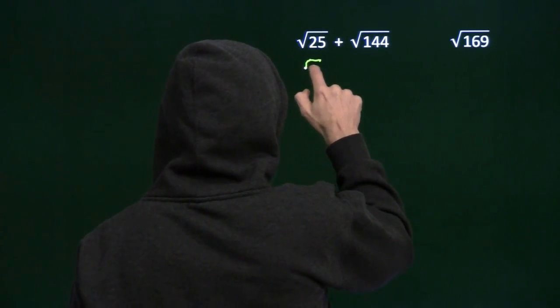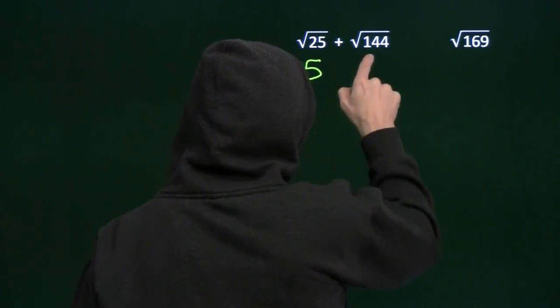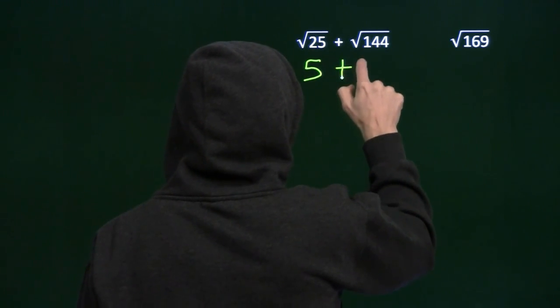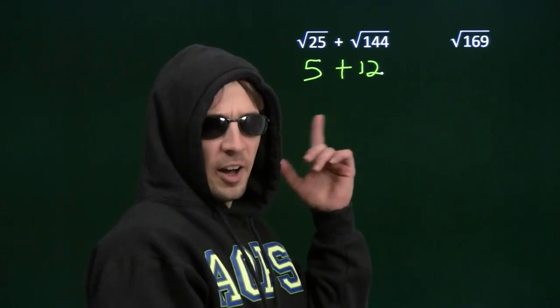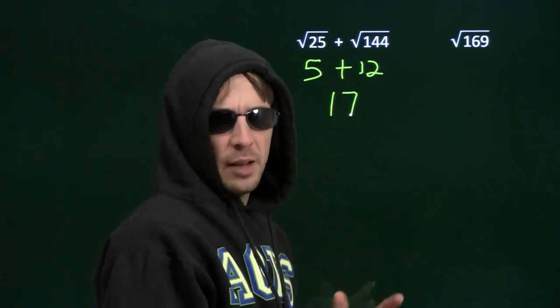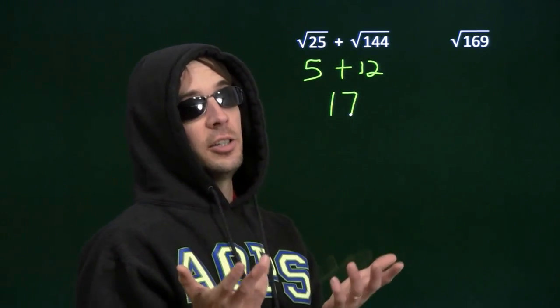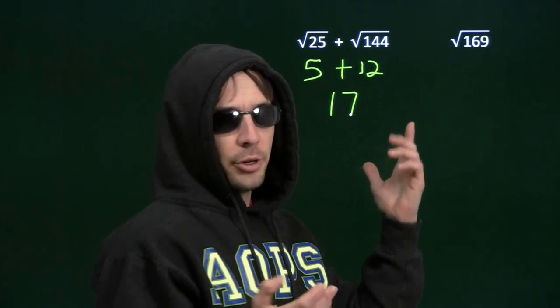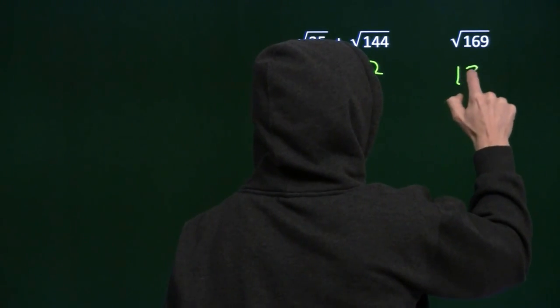Square root of 25, that's just 5. Square root of 144, that's just 12. 5 plus 12, that's 17. Now over here we have the square root of 169. 169 is 13 squared. Square root of 13 squared, that's 13.